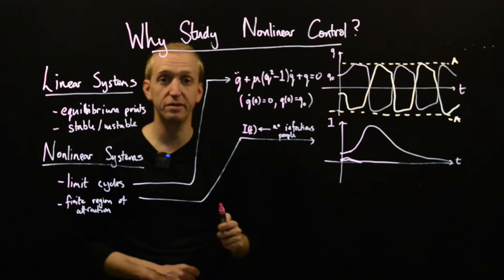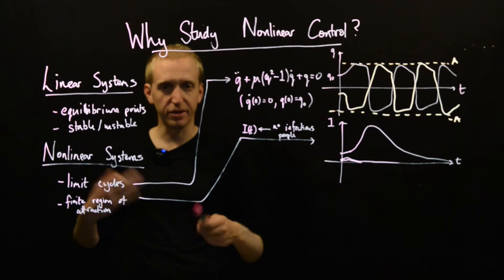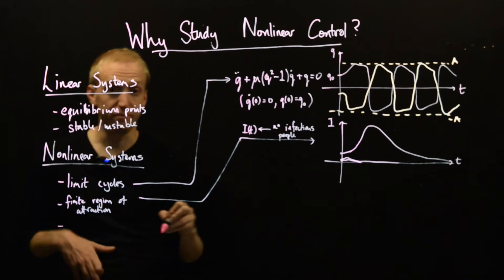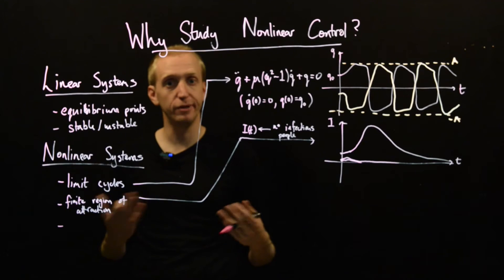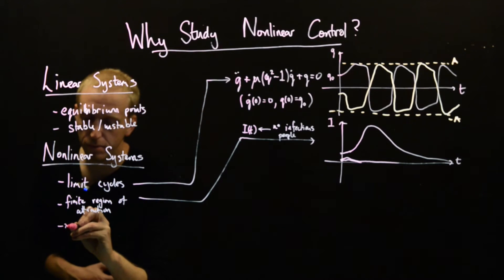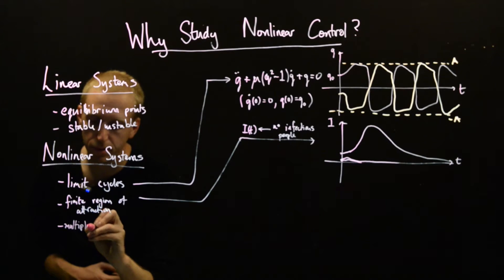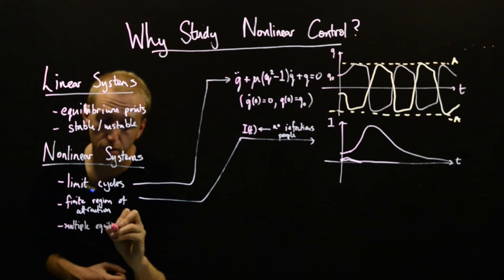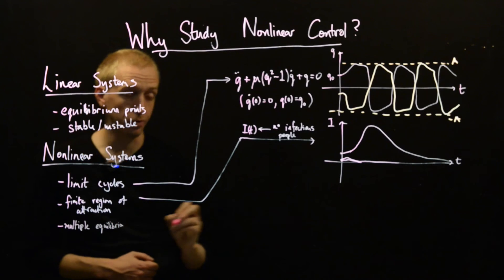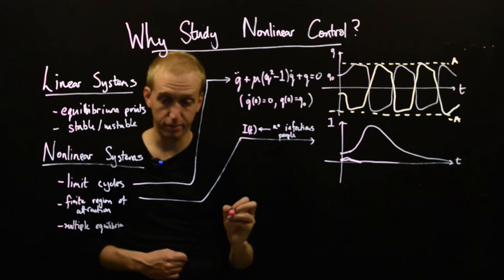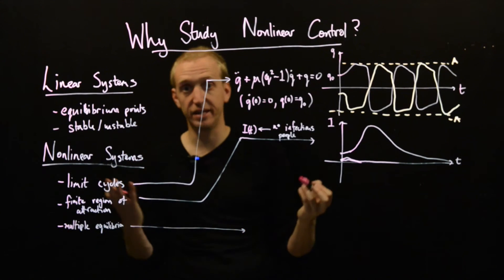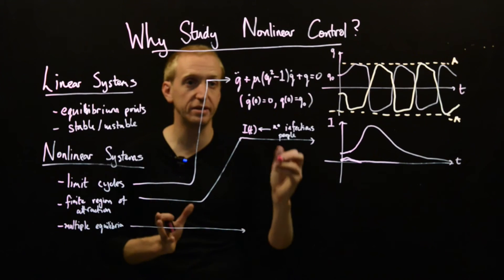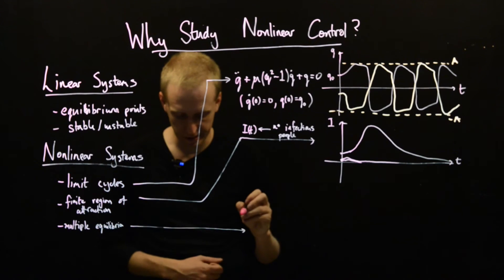But this is another fundamentally non-linear behavior for different scalings of your initial conditions. Your response can be wildly different and maybe you'll be stable or perform very well for small but perform disastrously for large. So, this is sort of what we mean by finite regions of attraction. And the third example that we'll focus on in this lecture and really in the course is that of multiple equilibria.